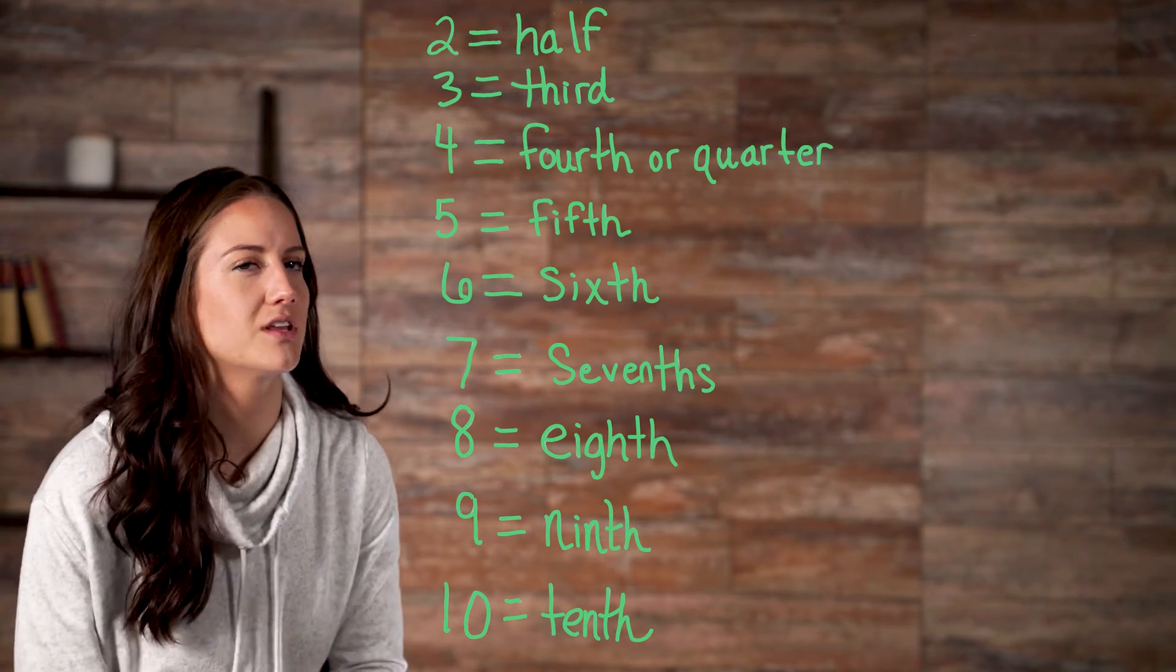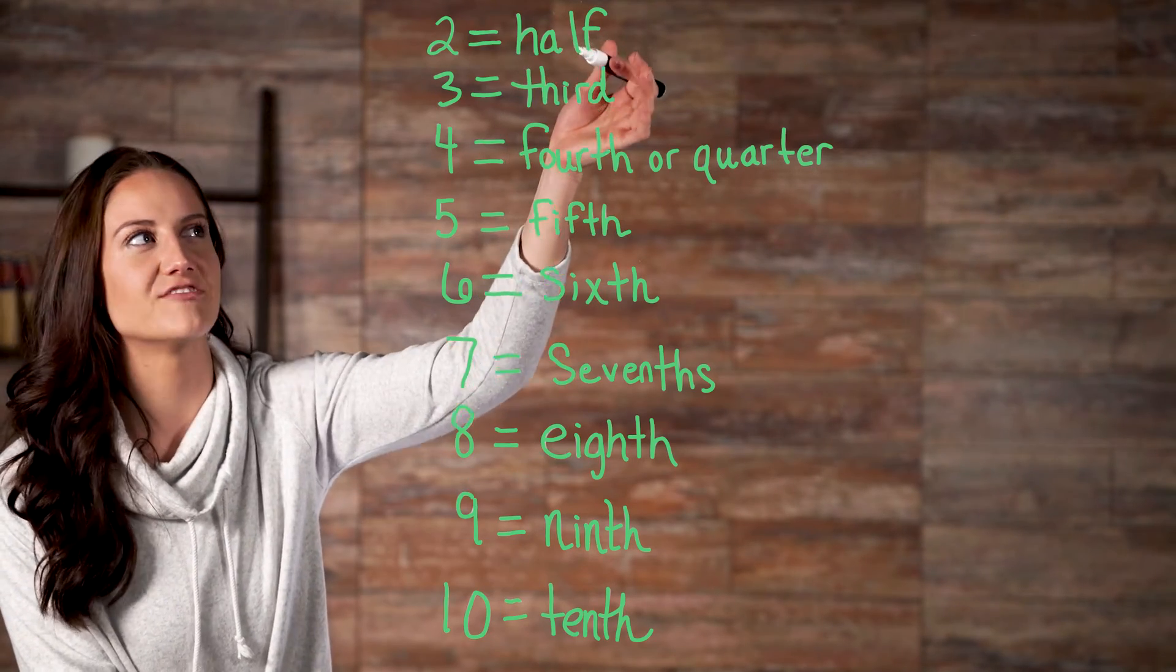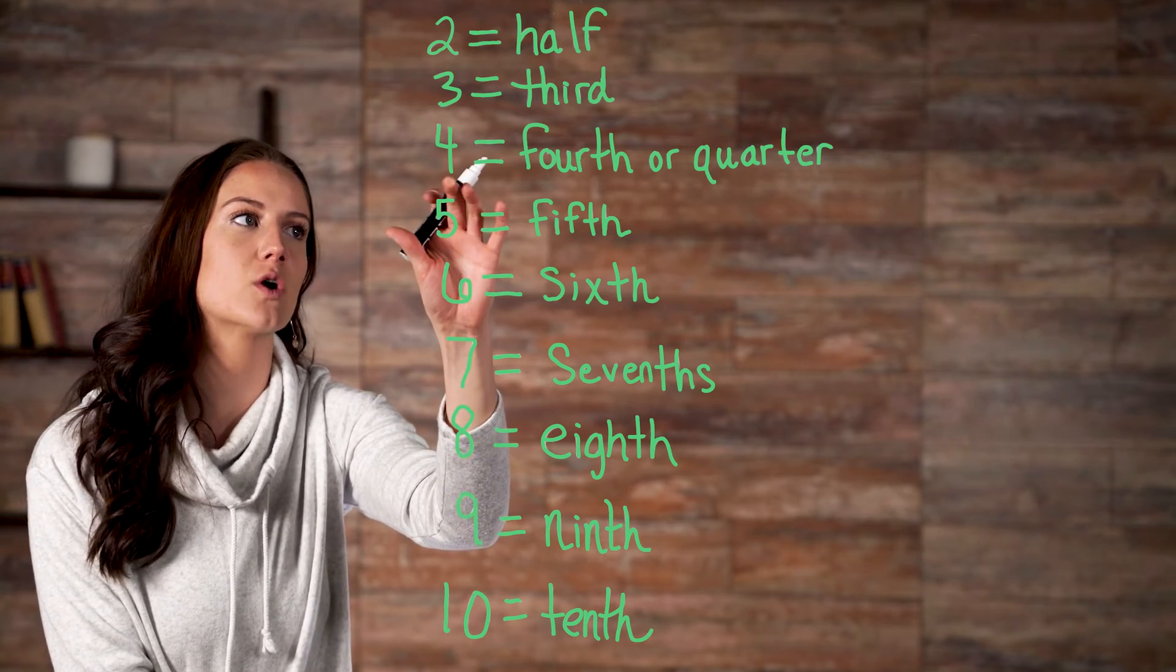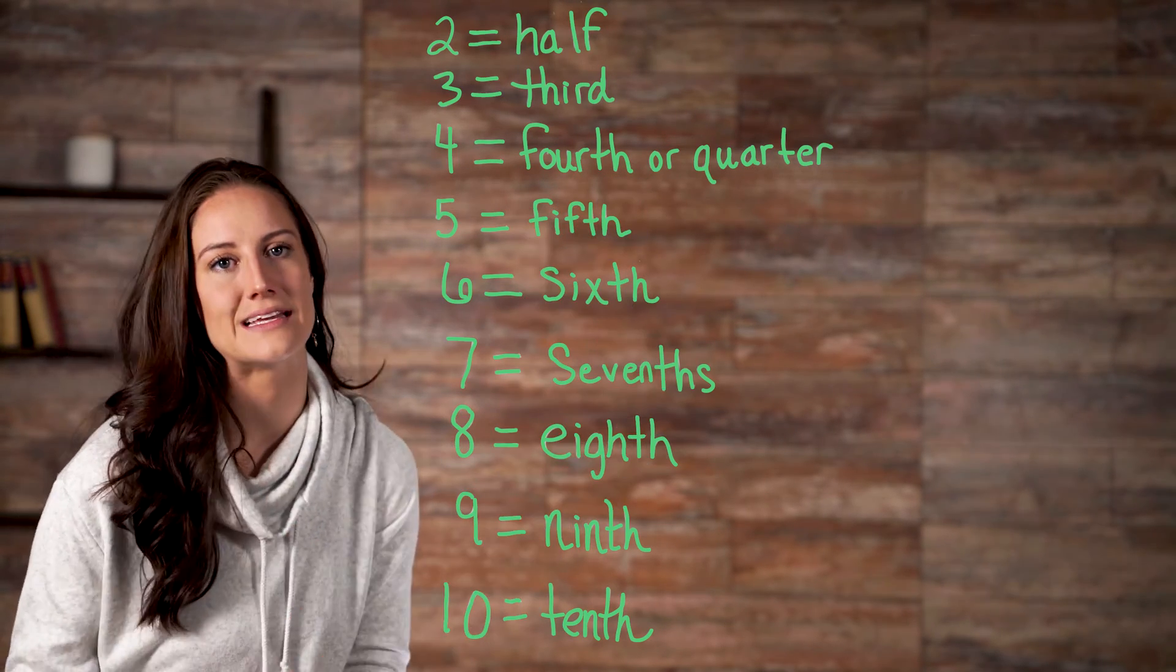As you can see, there are a couple of exceptions. If our denominator is two, you could say half instead of second. Or, if our denominator is four, you can say quarter instead of fourth. But, either one is acceptable.